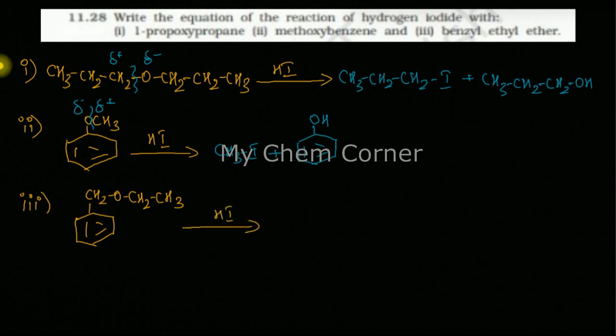Now in this case also, same thing: the oxygen over here you can break it directly to the alkyl chain. So here I can break this part to the alkyl chain and I can form CH3-CH2-OH plus benzene ring with CH2-I.